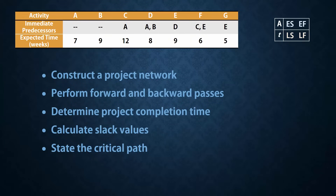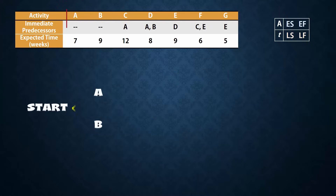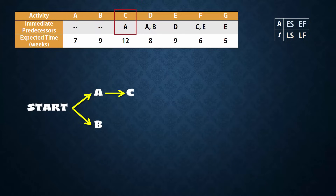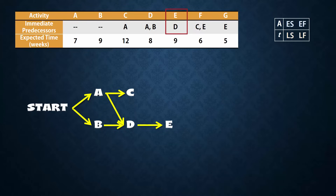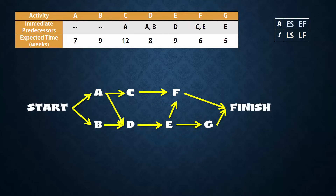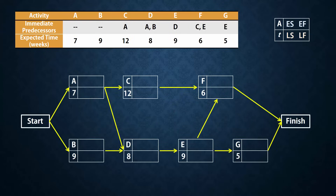I usually like to start with a sketch to make it easier when drawing the full network. Activities A and B have no predecessors, so they can begin at start. Activity C needs A to be completed before it can start. D needs both A and B completed. E needs D. F needs C and E. And G depends on E. Since F and G have no successors, they go to finish. Here is the network with the activity nodes displaying the letters and times.